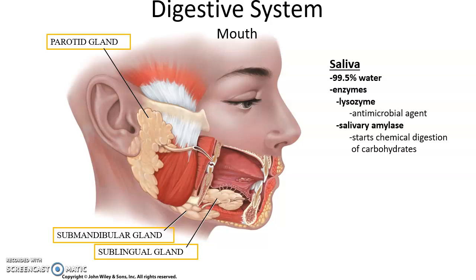There's the enzyme lysozyme, which has an antimicrobial function — it tries to kill any pathogens we might be consuming with our food. Saliva also has salivary amylase, an enzyme that digests and breaks down carbohydrates. So the beginning of chemical digestion occurs in the mouth by the enzyme salivary amylase, just breaking down carbohydrates.